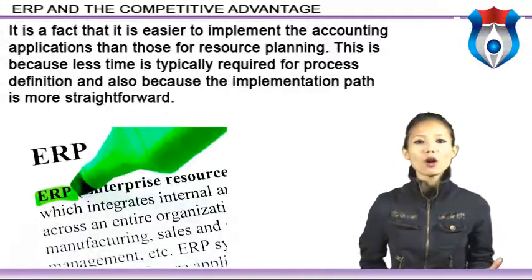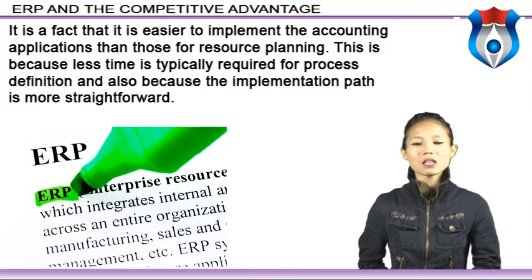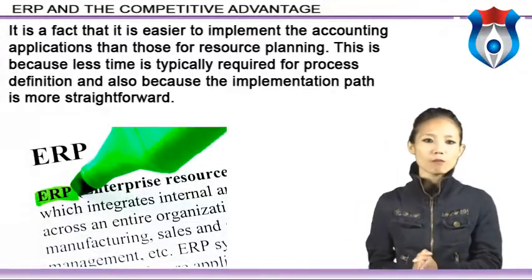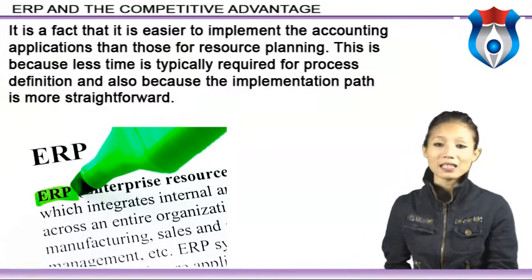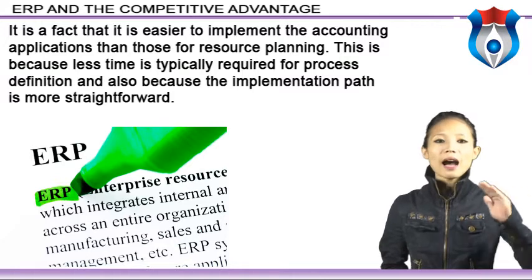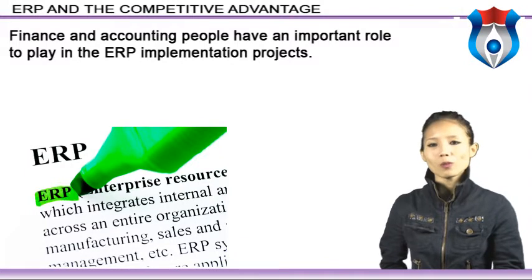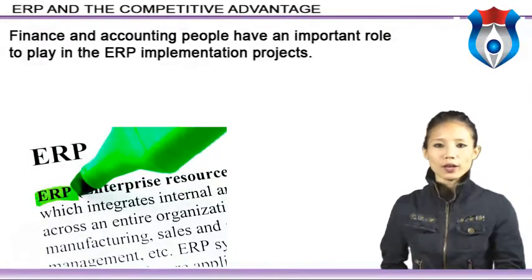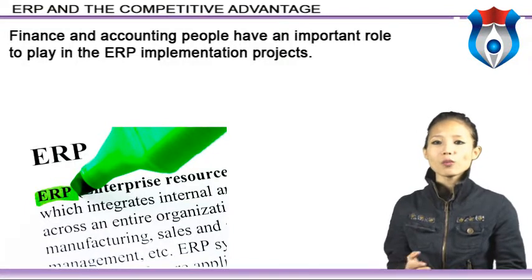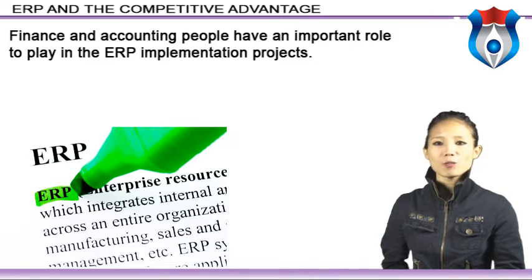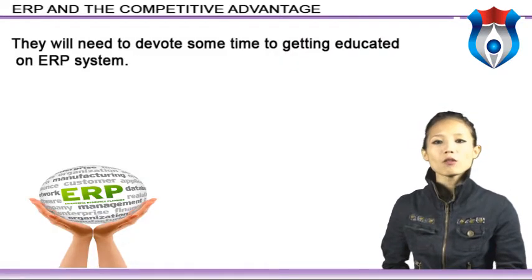Most companies that have some sort of computerized information system would have computerized their finance and accounting processes. The reasons are based on the relative immaturity of effective formal resource planning and scheduling processes versus the high degree of maturity on the finance and accounting side. Finance and accounting people have an important role to play in ERP implementation projects — on the executive committee, the project team, and spin-off task forces.